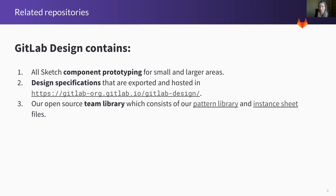Next is our GitLab design repository. This project includes all the Sketch files we use for creating different specs or building features. It includes our team library, which consists of two files: our pattern library and our instance sheet. The pattern library includes individual symbols that make up all of our global components within Sketch. The instance sheet takes all of those symbols and builds larger page views that can be used to work on different issues or create new features. From our team library, we're able to export specs for specific features or components, which are then shared with our front-end team when building out the reusable components included in our design system.